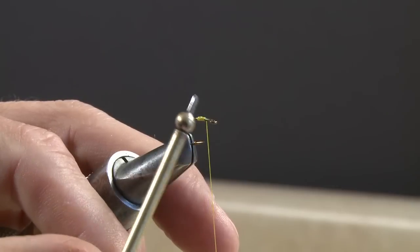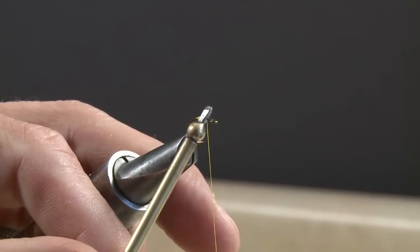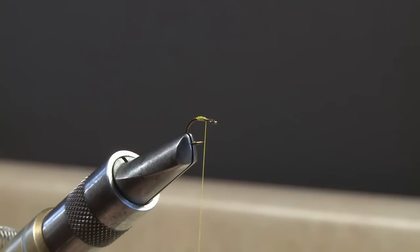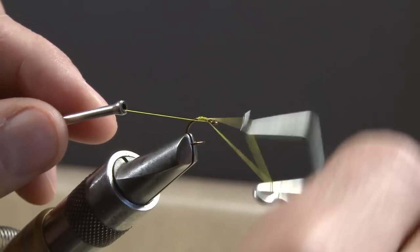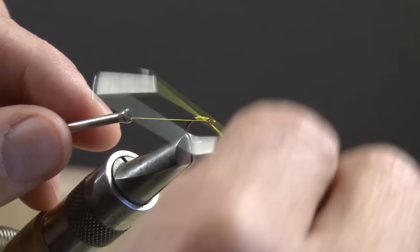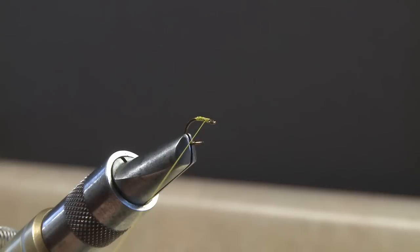I've modified my whip finish tool a bit by grinding down the butt end of the handle into a chisel shape. This allows me to cut the thread at the end of the whip finish without having to reach for a pair of scissors.